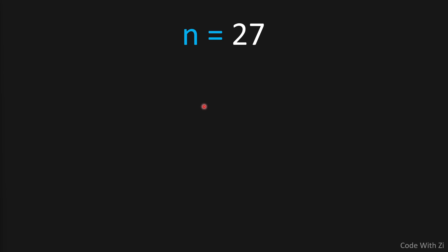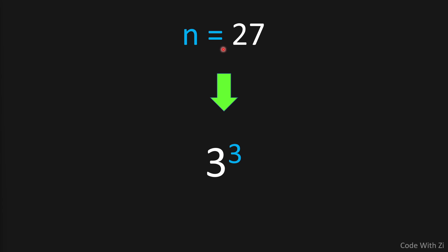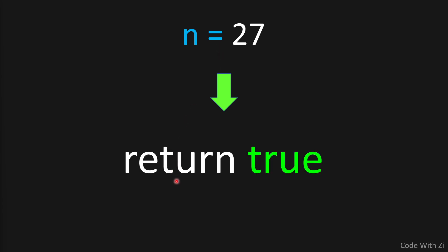Welcome to Code with Z. In today's video, we're given a number and we have to find out if it is a power of three. As you all know, 27 is equal to three raised to the power of three, so that means this number is indeed a power of three, and we're going to return true if that is the case.